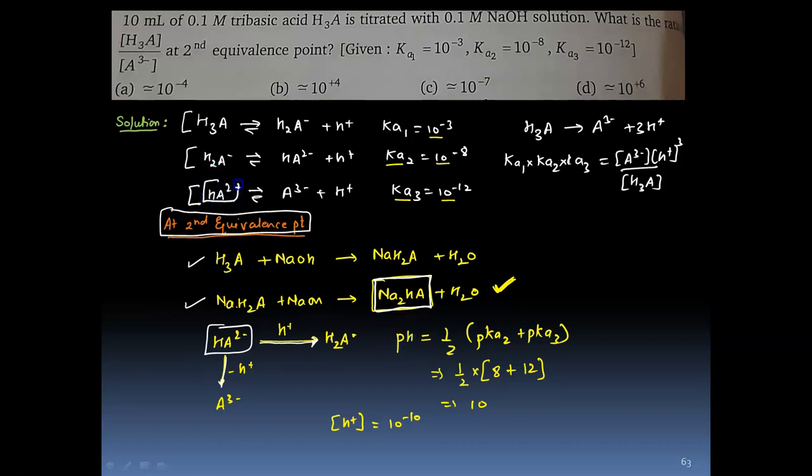Which means HA²⁻ can donate a proton or HA²⁻ can accept a proton. So it will be one by two of pKa2 plus pKa3. That comes out to be 10, which means at this second equivalence point in the solution, we have H⁺ concentration is 10⁻¹⁰.